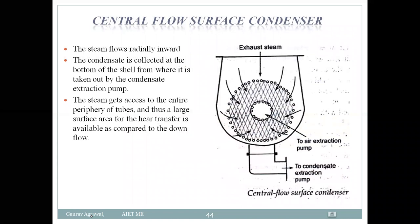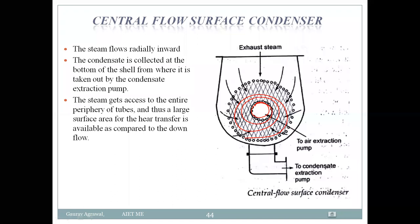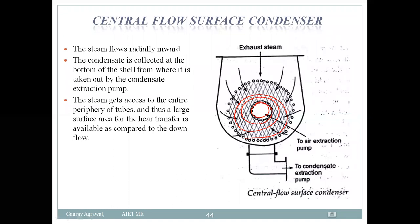Next is the central flow surface condenser. Similar in concept to centrifugal flow, steam moves radially inward. The condensate is collected at the bottom of the shell and taken out by a condensate extraction pump. The steam gets access to the entire periphery of the tubes, providing a large surface area for heat transfer compared to the downflow type. As studied in heat transfer, a larger surface area gives better heat transfer since Q value increases with area.